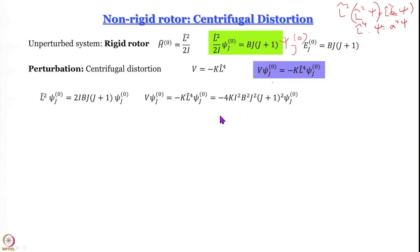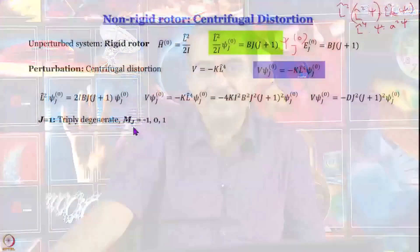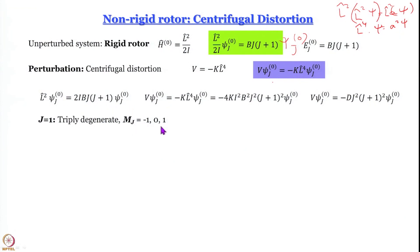This is the eigenvalue of the V operator. In short, V operating on psi_j⁰ gives minus D·j²(j+1)²·psi_j⁰, where D = 4kI²B². Let us work with the level j=1, which is triply degenerate — the magnetic quantum number m_j equals minus 1, 0, and plus 1. The V matrix elements will be written V_11, V_12, V_13, and so on. Our job is to find these matrix elements.